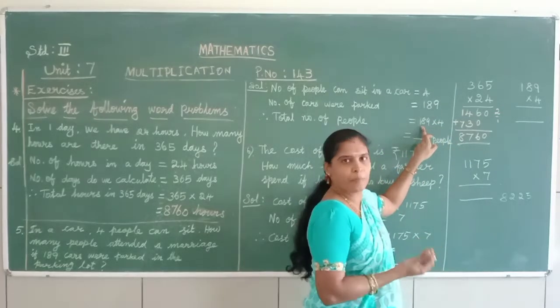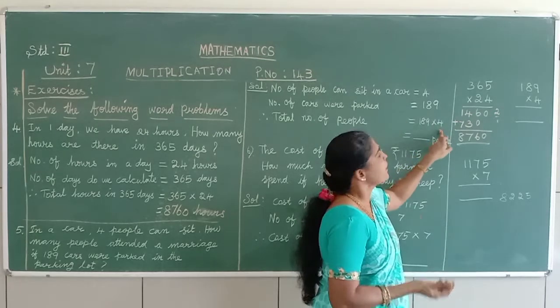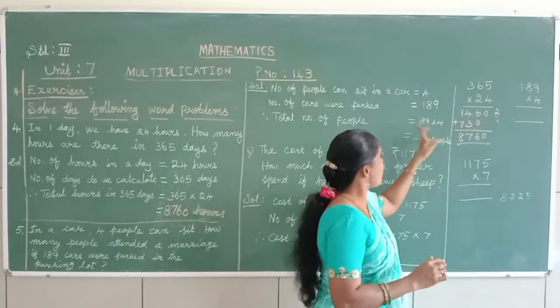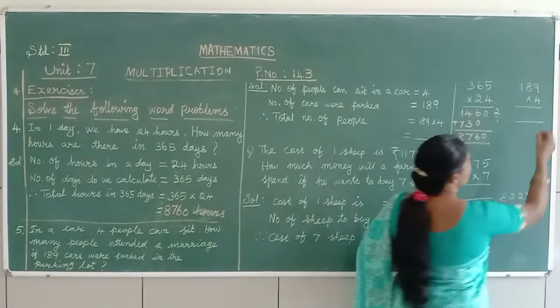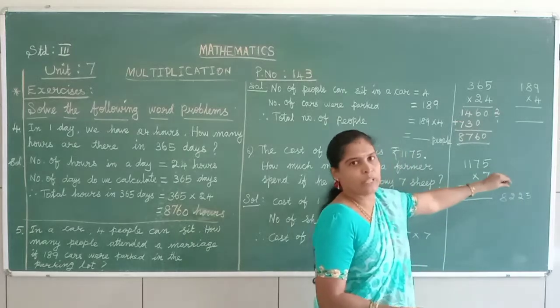189 cars are parked already. And in the car, 4 people they can sit. So, 189 into 4. So, in the working case, you have to do this.